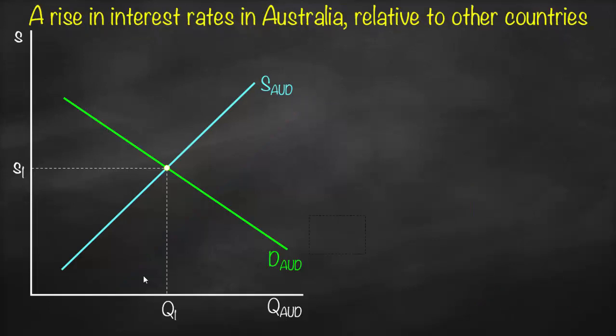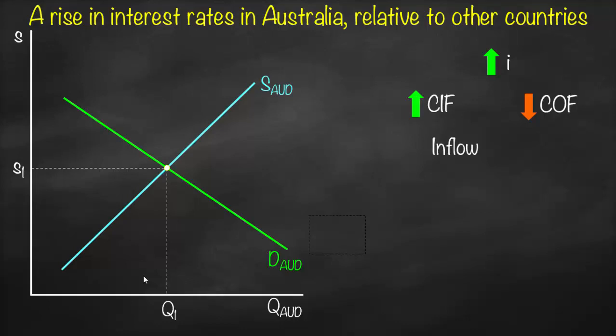Let's talk about the third example: a rise in interest rates in Australia relative to other countries — the interest rate differential. A higher interest rate differential means the Australian interest rate minus the foreign interest rate is positive. This creates two forces: foreigners want to come and invest in Australia to benefit from a higher return, so we have higher cash inflow. At the same time, Australians are not willing to take money away from Australia, so cash outflow decreases.